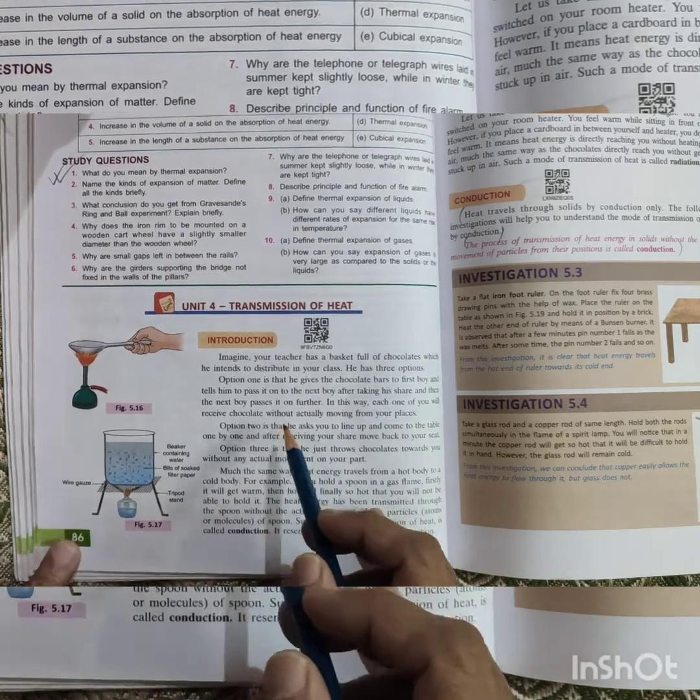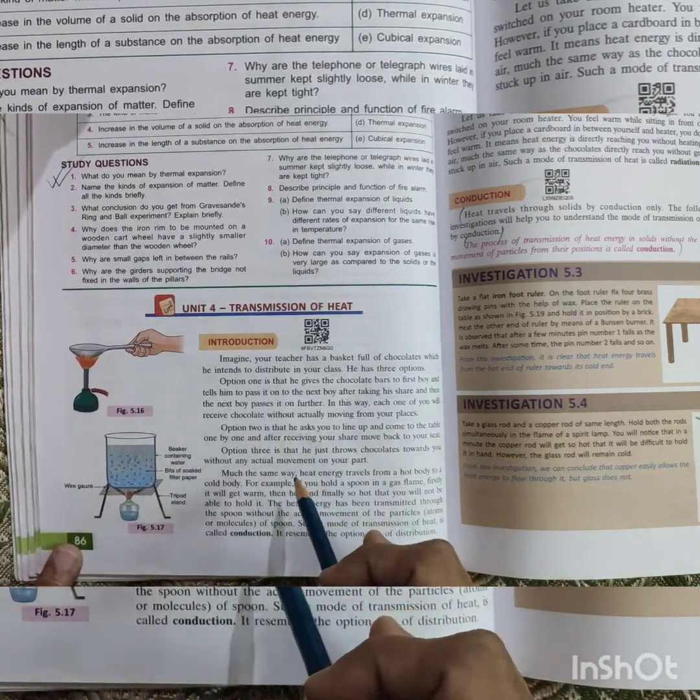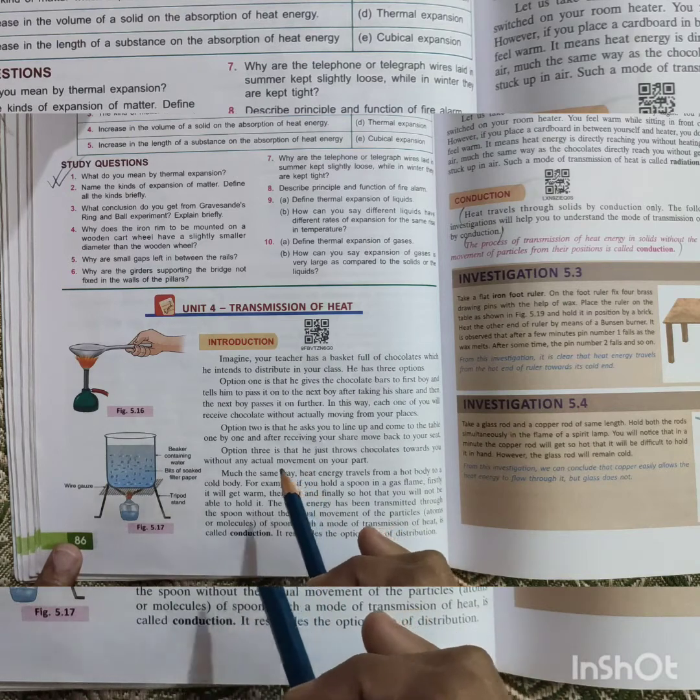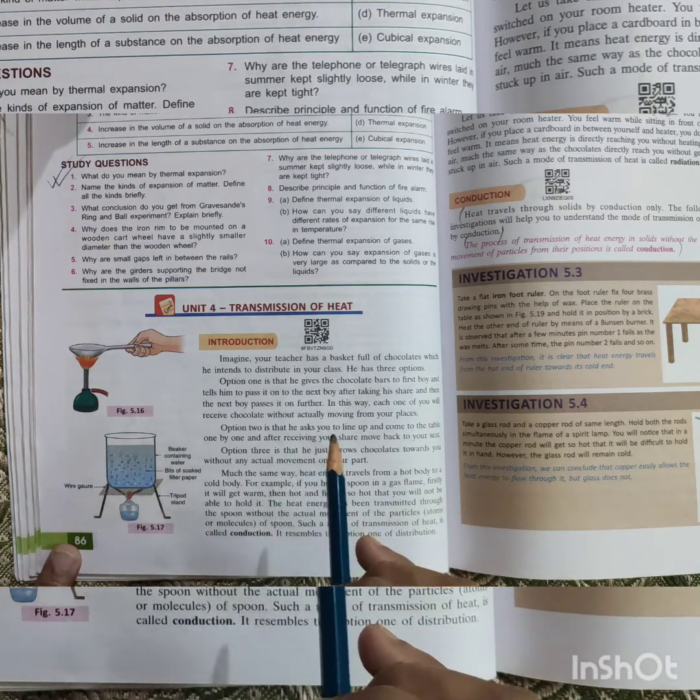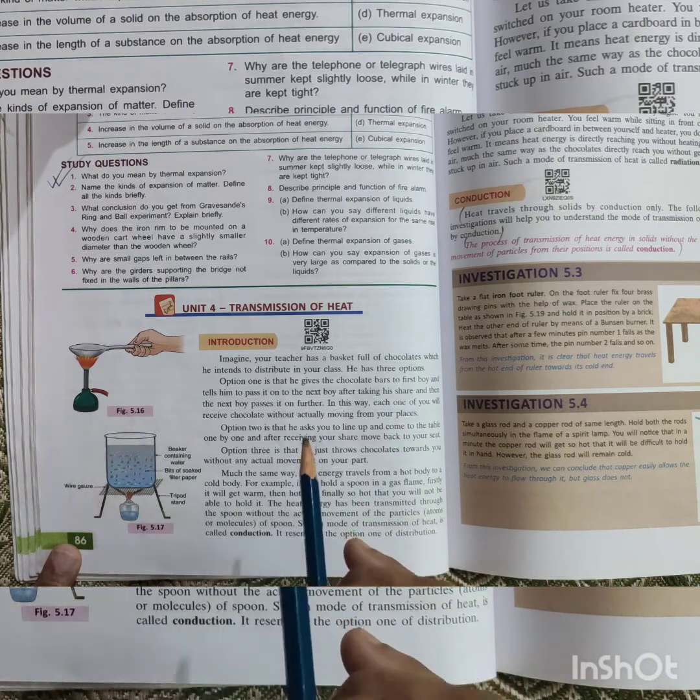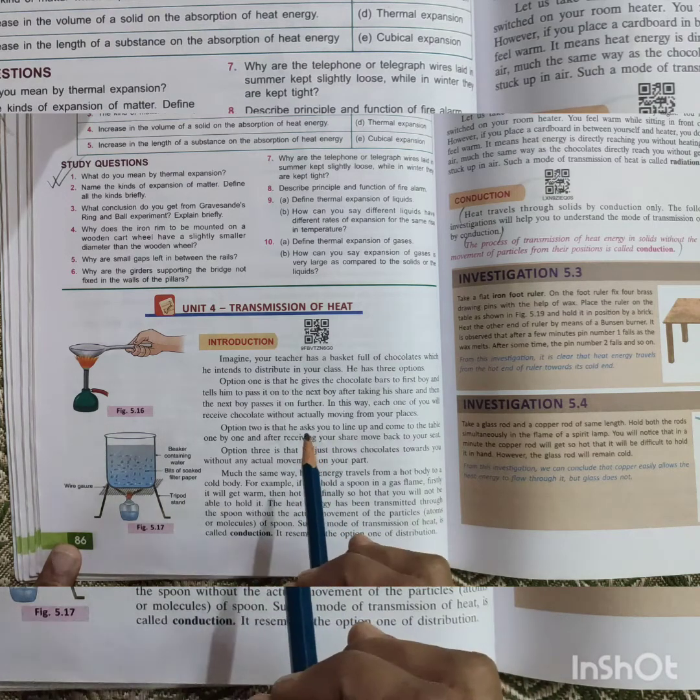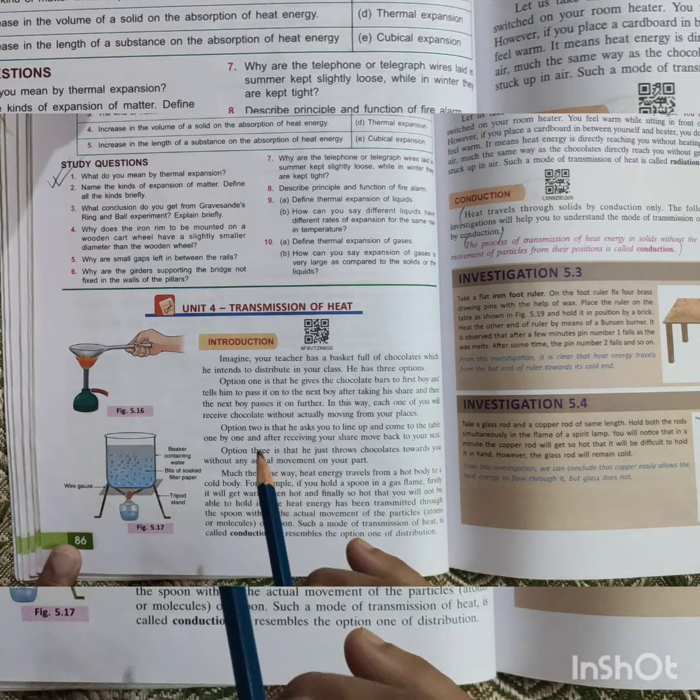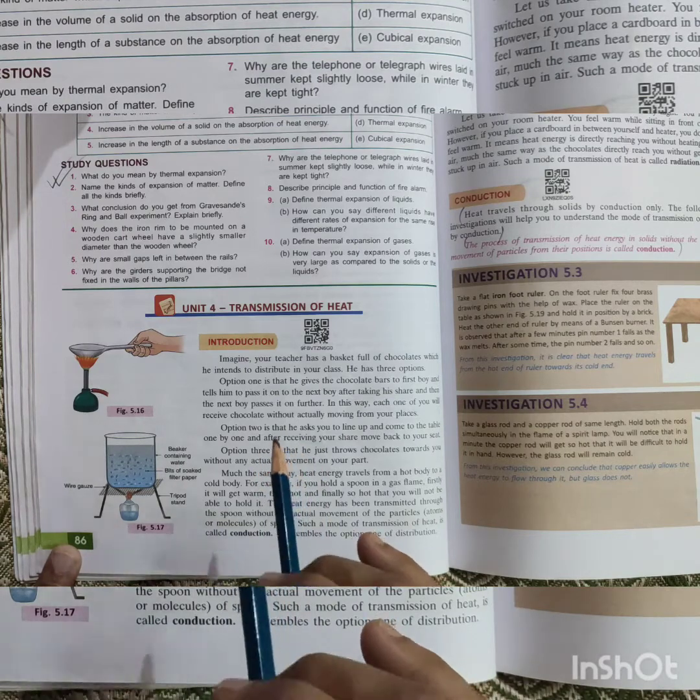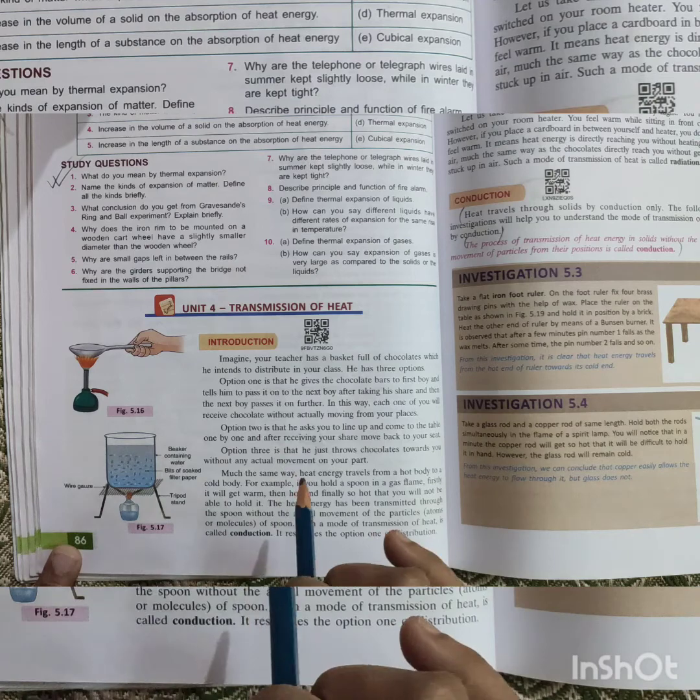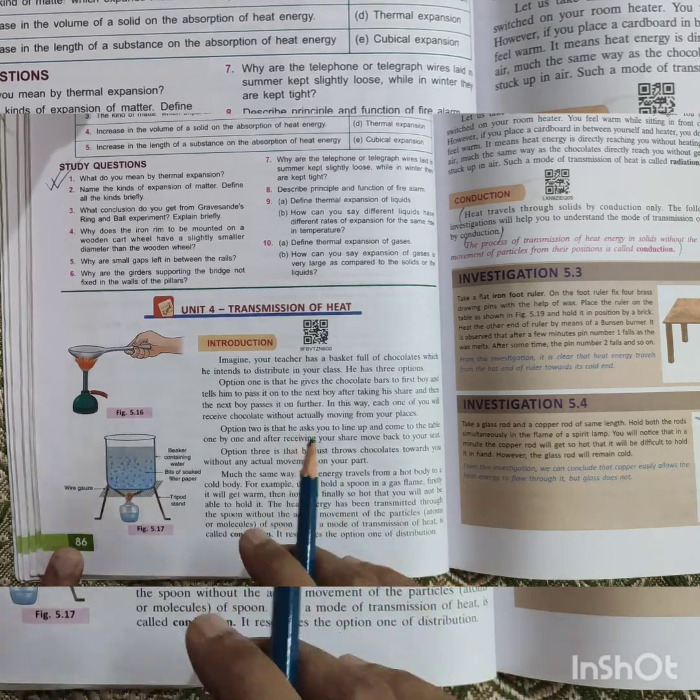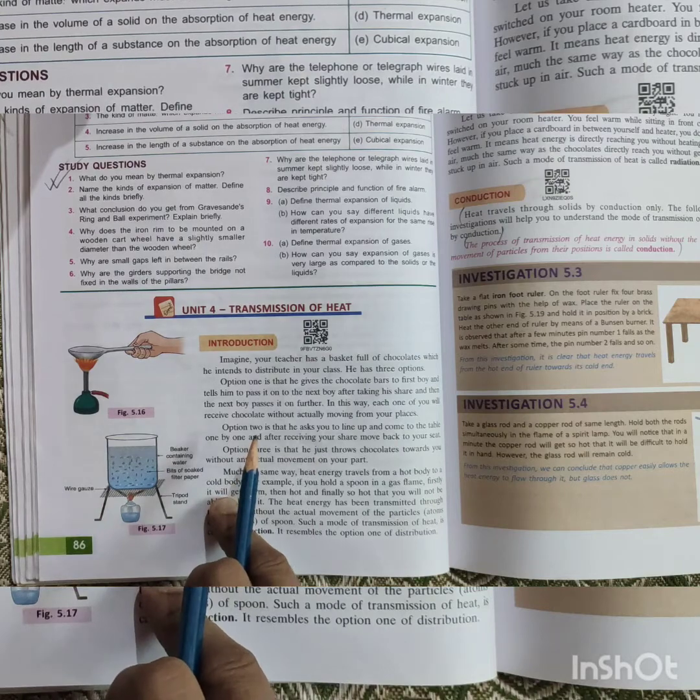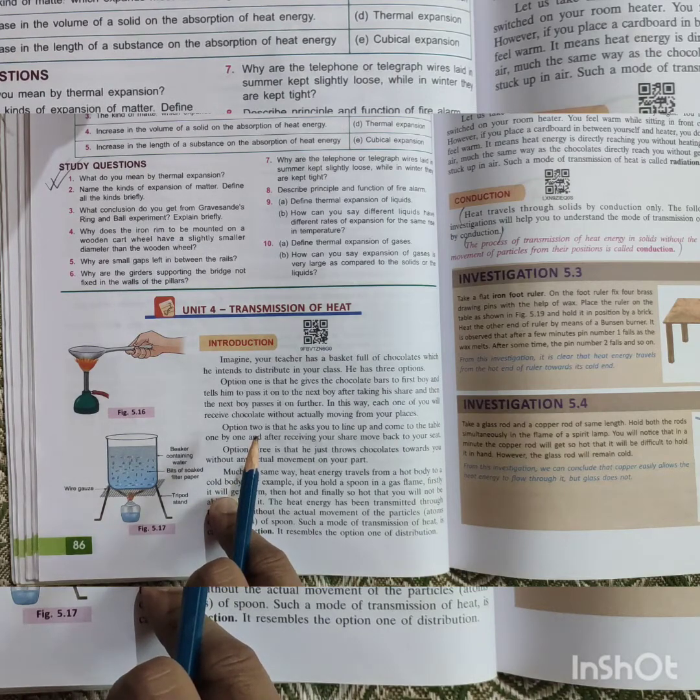For that reason, we have three ways of transmission: conduction, convection, and radiation. Now I am going to discuss and explain these three processes because these are the main things to learn in this unit. So first, I will start with conduction.